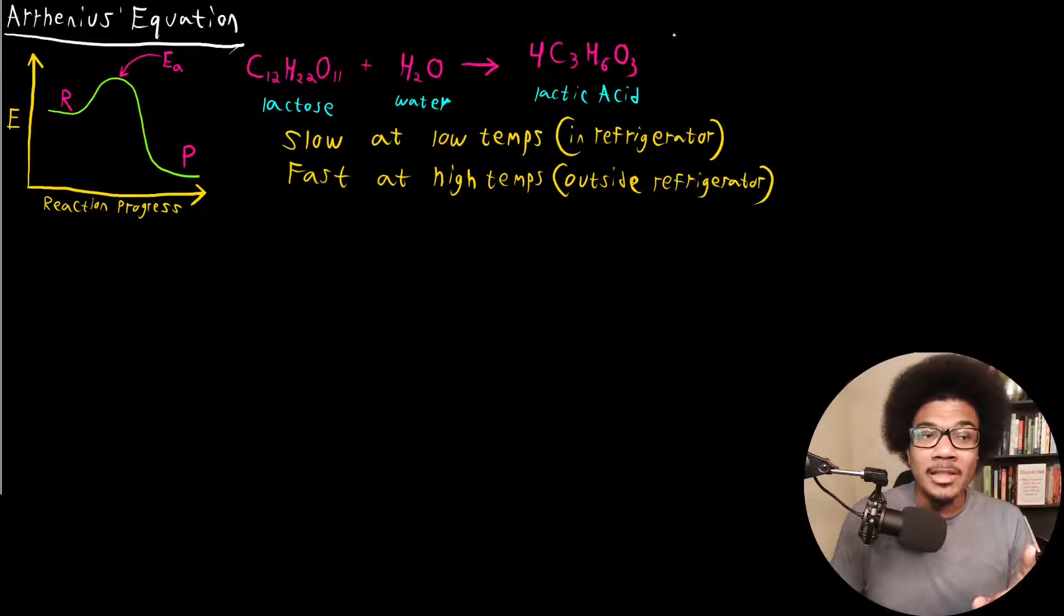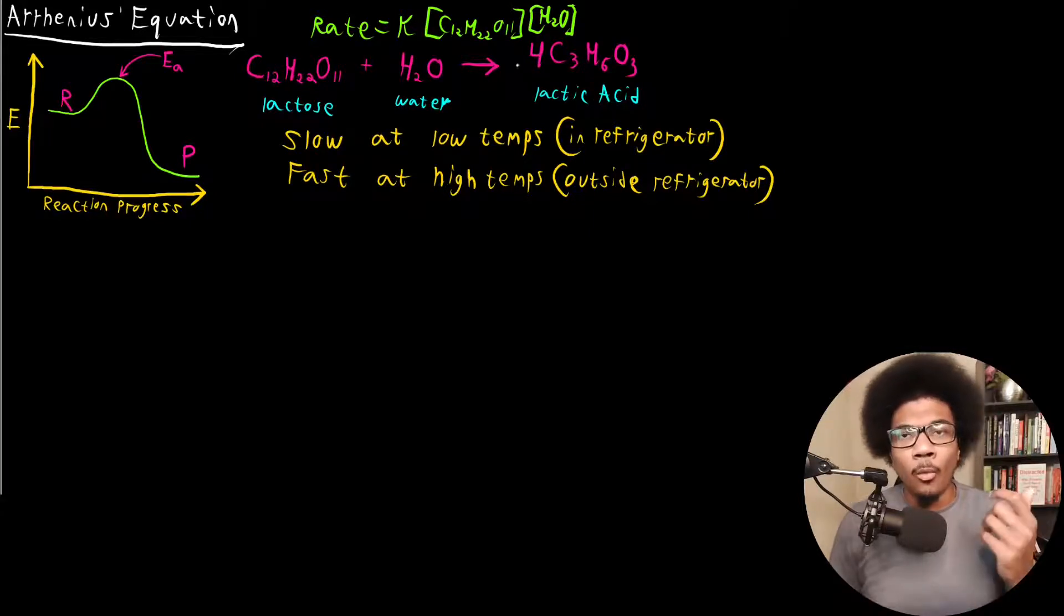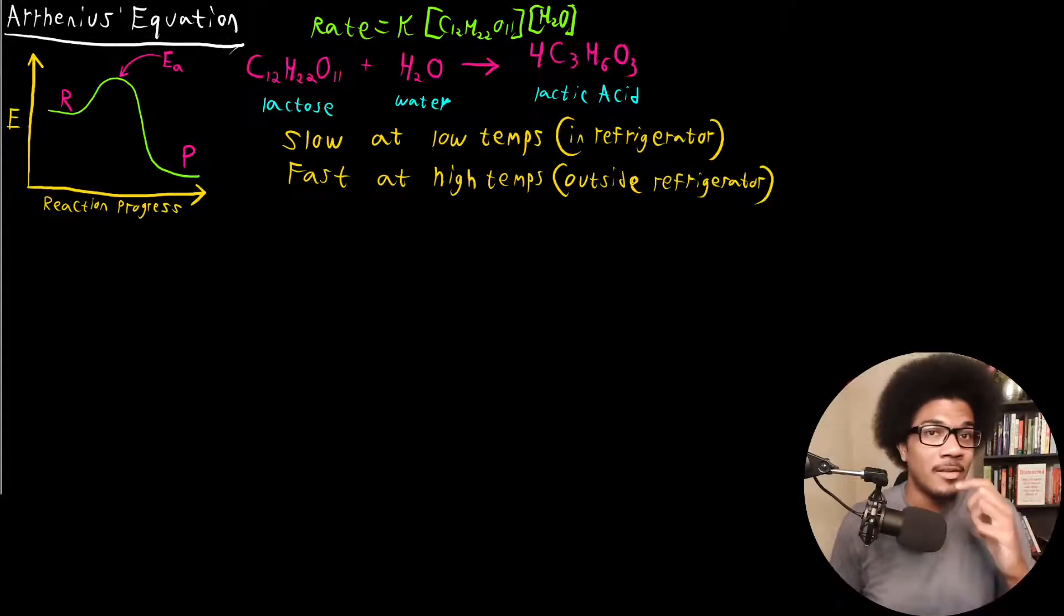But if we write out our rate laws, let's say we were to write out a hypothetical rate law for this reaction. Let's say we have the rate would be equal to some rate constant, you got your lactose here and H2O. This is just assuming that it's first order in both. You would have some rate expression that looks like this. Where is the temperature dependency? There is none as we have right here. You have a rate, which is just going to be some time dependence, the rate constant, some concentrations. You don't have any explicit dependence with temperature on the rate laws.